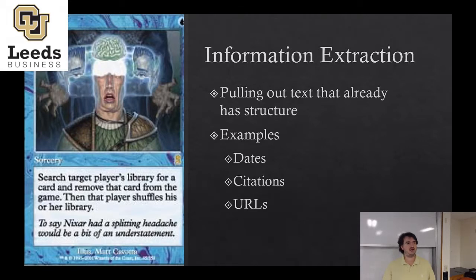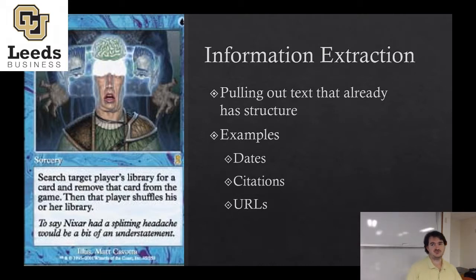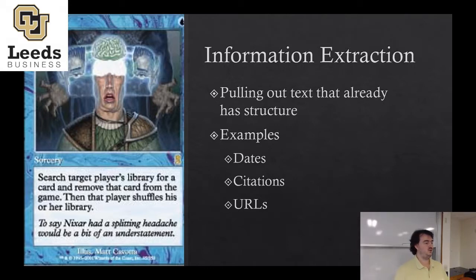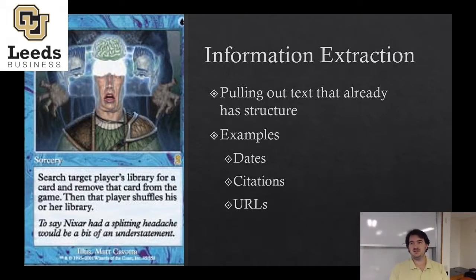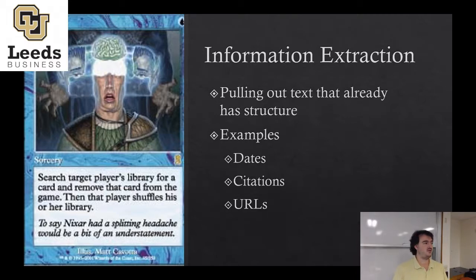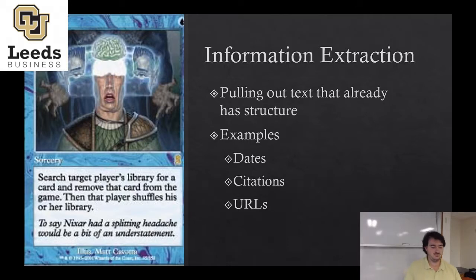Information extraction is just pulling out structured data that got mixed inside your text. One of Kai's prior students, Jing Jing, got her big papers on pulling out citation networks — academic papers have citations in them, and a core step is identifying what the citations are: things with a last name, a comma, and a year, or a journal name and a page number. There's a wide array of patterns, but they are well-defined according to a structured system of rules.